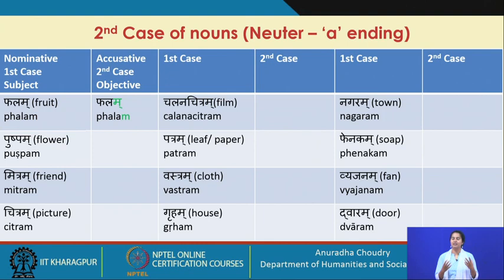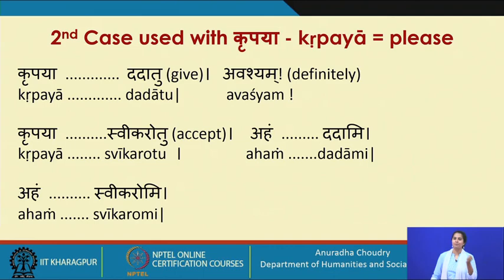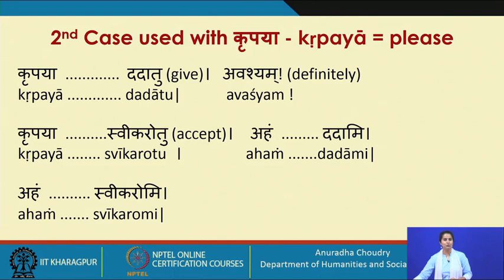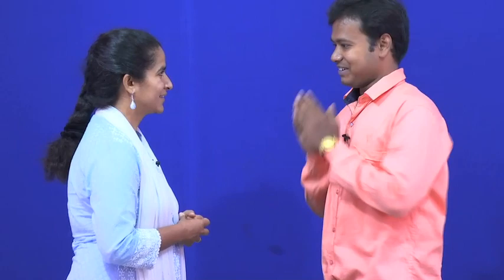Moving on, we'll use the second case with the word krippaya meaning 'please'. When you want to request something, you say: krippaya chashakam dadatu — please give the glass. The new word avashyam means 'yes, indeed.' Avashyam dadami means 'definitely I will give.' Swikarotu means 'please accept.' So if I want to say please accept the flower: krippaya pushpam swikarotu. The answer: aham pushpam swikaromi.